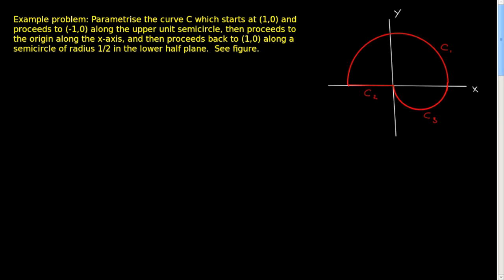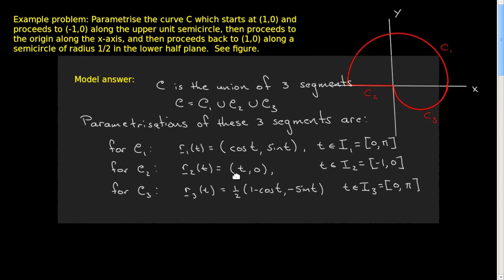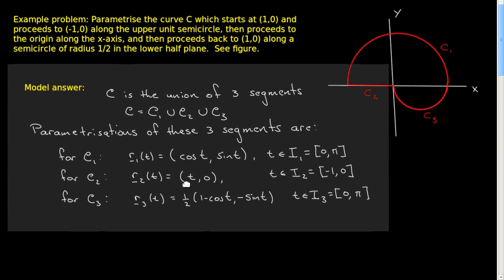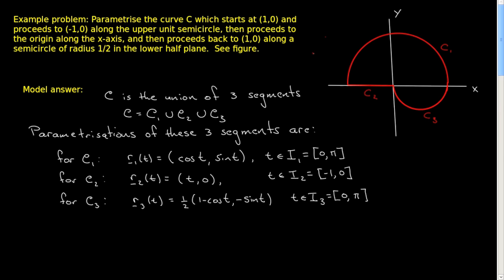A model answer would be simply to note that this curve C is a union of three segments: C = C1 ∪ C2 ∪ C3, and then to give a parametrization for each of the segments separately. So for C1, we have this parametrization — you can pause the video and verify that — over an interval I1, which is 0 to pi.